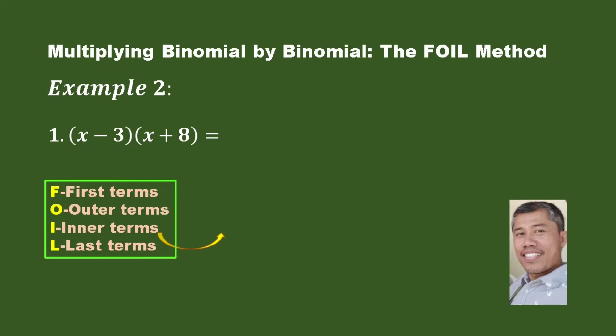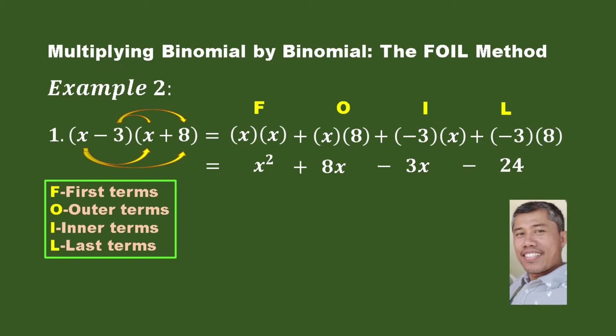Using the FOIL method, we have x times x is x squared. That's our F. Next is x times positive 8 is positive 8x. That's our O. Next is negative 3 times x is negative 3x. That's our I. And the last one is negative 3 times positive 8 is equal to negative 24. That's our L.